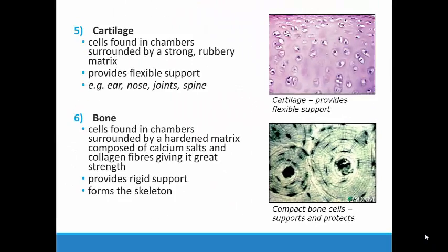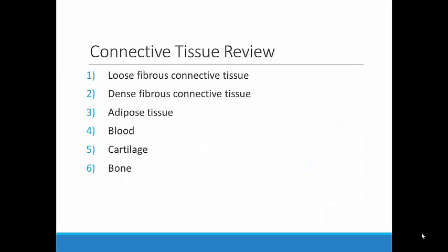This material forms our skeleton, which provides a rigid framework for our whole body. Before moving on to the next type of tissue found in the body, let's do a quick recap of the six types of connective tissue: loose fibrous connective tissue, dense fibrous connective tissue, adipose tissue, blood, cartilage, and bone. Remember, connective tissue binds, supports, and protects our bodies.